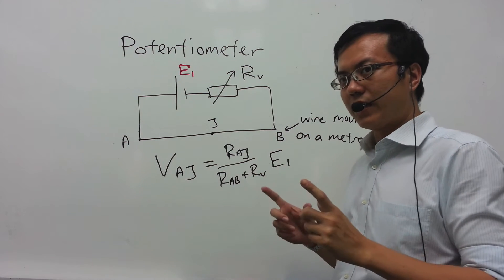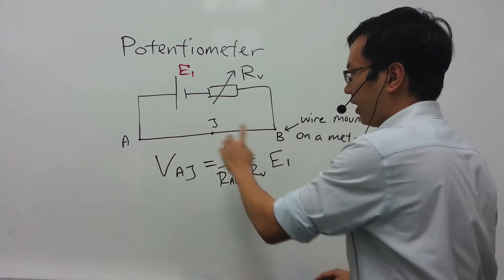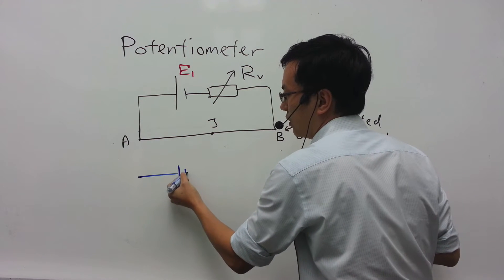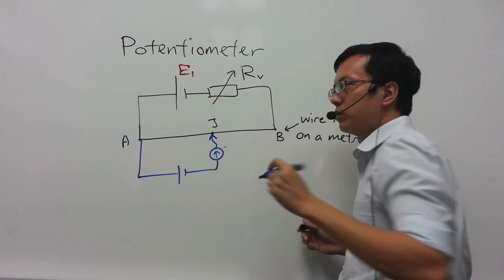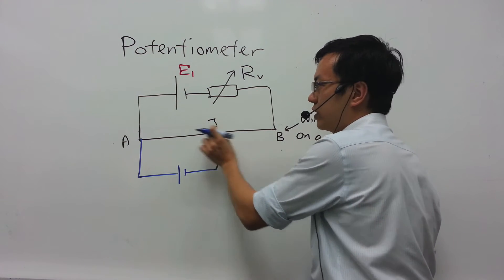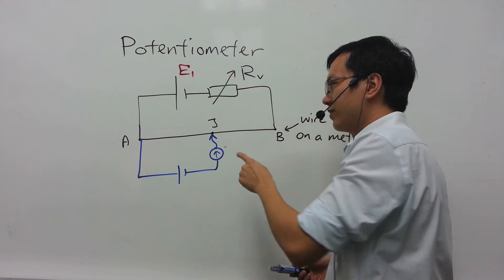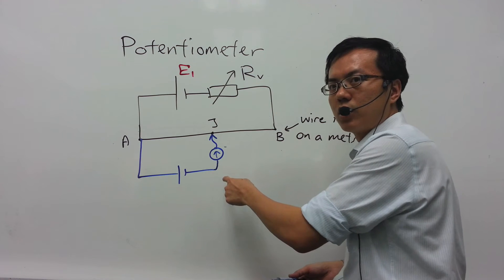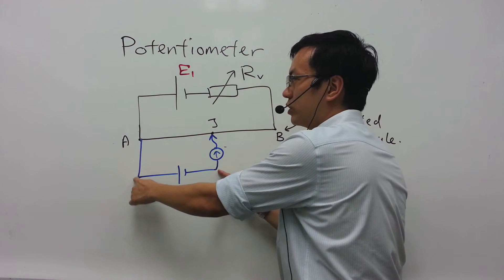We are going to attach an EMF or a device for which we are trying to measure its potential difference across AJ, and J can be any position along this meter ruler. The simplest case is where we have another cell attached to AJ. AJ is the point in contact between the jockey and the meter ruler, and the point of contact J can be shifted anywhere along this meter ruler. When this jockey is shifted, what we will look out for is for the galvanometer to register a null deflection — that is to say, there is no current flowing through the galvanometer. When that happens, the potential difference across these two points will be equal to the potential difference across AJ.